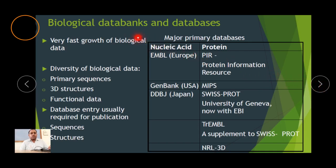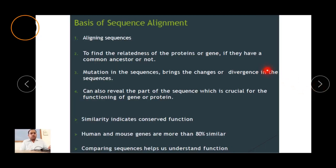Biological databases have grown rapidly because biological data is highly diverse — it can be in primary sequences, 3D structures, or functional data. Different databases are available for different kinds of sequences. For nucleic acids, examples are EMBL, GenBank, and DDBJ — the three primary sequence databases. For proteins, examples include Protein Information Resource, MIPS, SwissProt, TrEMBL, and NRL-3D. Sequence searches and alignment searches can be performed using programs like BLAST.